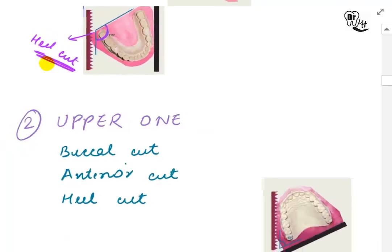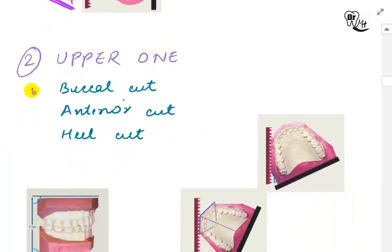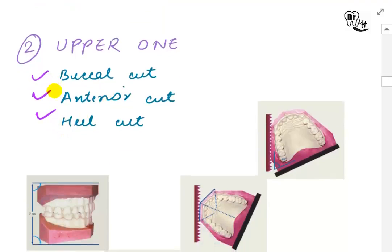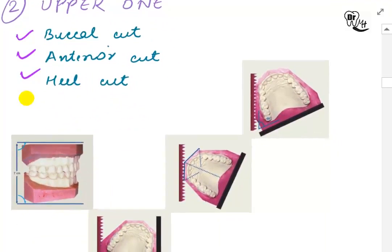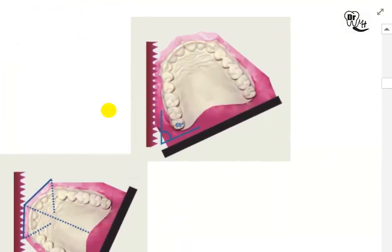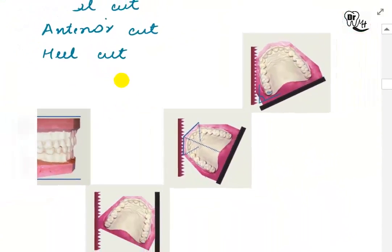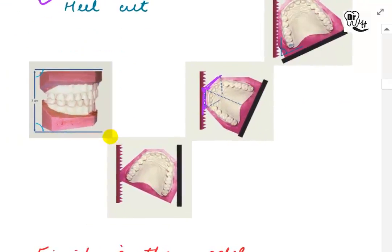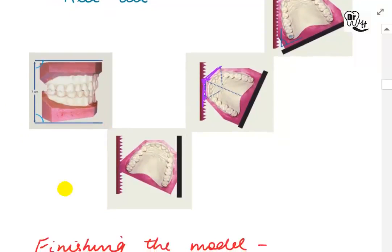For the upper model, we perform the buccal cut, the anterior cut, and the heel cut. The curve cut used in the lower model is replaced by the anterior cut. The buccal cut remains the same at 60 degrees. For the anterior cut, we take a point at the midline and a point near the canine region and make a straight cut on each side — it does not follow a curve. For the heel cut, we occlude both models and finish them flush with the heels of the lower model at 115 degrees.